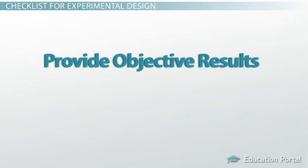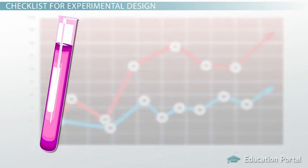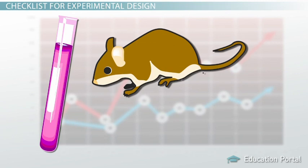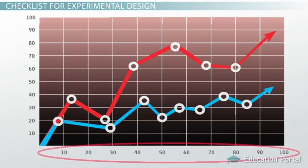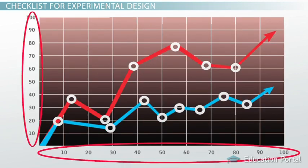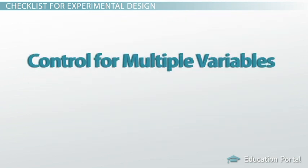Next, the experiment must provide objective results. There has to be data collected from the experiment that is measured in some objective way. A scientist can't say things like 'this chemical looked reddish purple' or 'that mouse grew a lot faster than the other one.' A scientist has to use numbers and units to describe his findings, and his experiment has to facilitate the collection of that data.